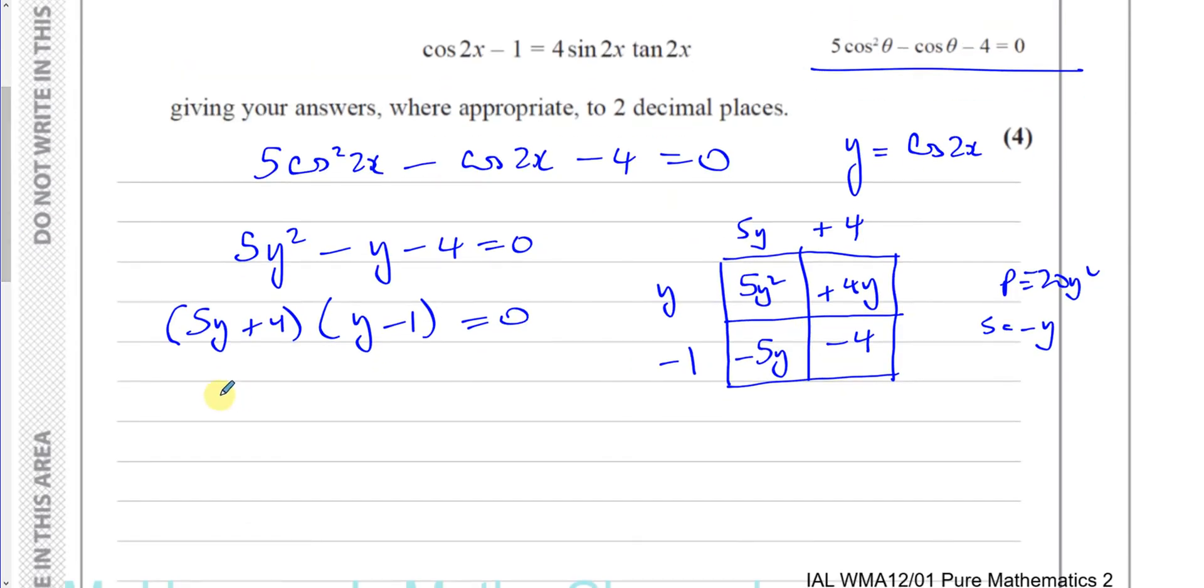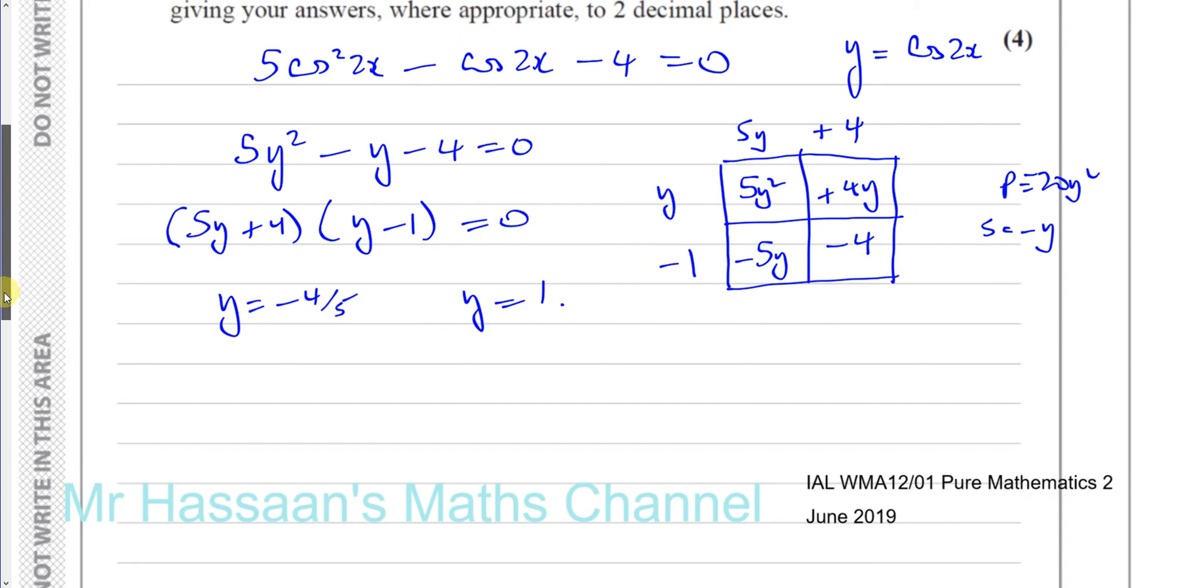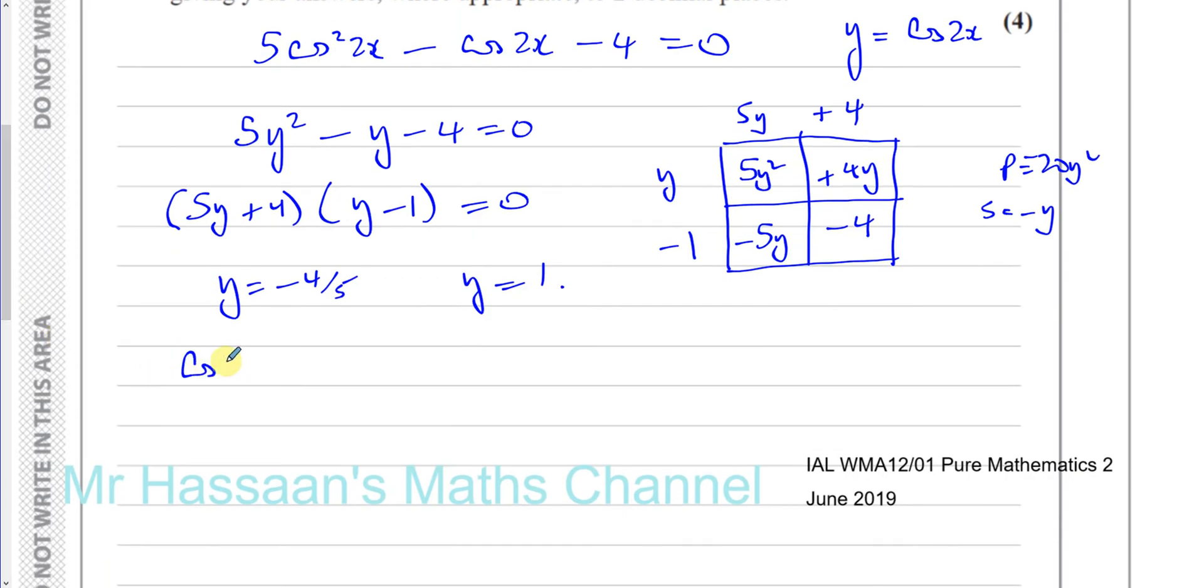So we're left with y equals minus 4 over 5 and y equals 1. So now we can say cosine of 2x equals minus 4 fifths and cosine of 2x equals 1.